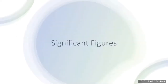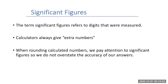In this video, we're going to look at significant figures. When we talk about significant figures, we're referring to the digits or the numbers that we actually measure — this is what we measure in a lab. When we use a calculator, that always gives us extra numbers. These extra numbers aren't needed or wanted when we write our final answer, which means we need to round the calculated number and pay attention to significant figures so we don't overstate the accuracy of our answer.